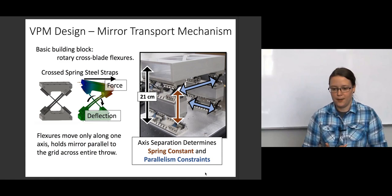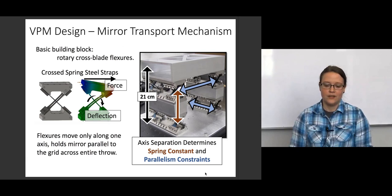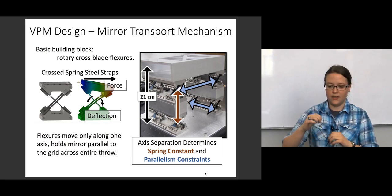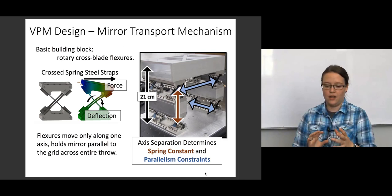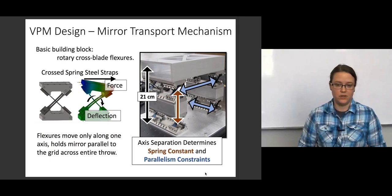So, to move the mirror, we actually use these things that are called rotary cross-blade flexures. So, we actually use the bending of metal to create a spring that we can control and engineer to the exact parameters that we want. This is kind of shown with these little X's here. Those are a design of these cross-blade flexures. And so, as you put a force on them, you actually get a rotation out, and then you actually build these up into a square, and you can get a horizontal translation, and then you can choose the parameters and the dimensions of each part of the spring to create translation while not moving at all in any of the other directions that we don't want the mirror to move.